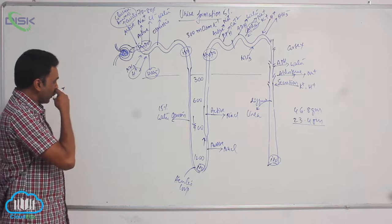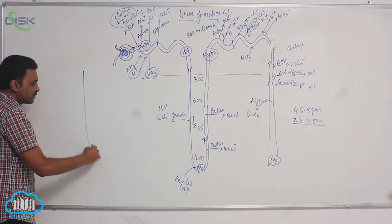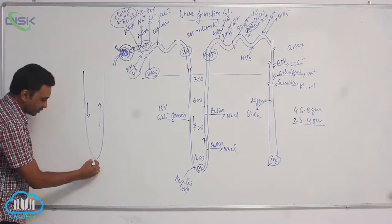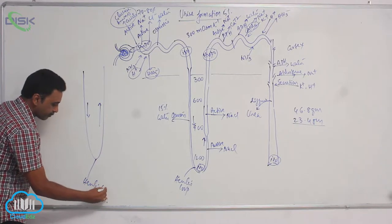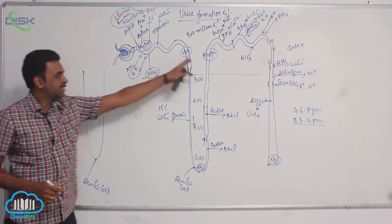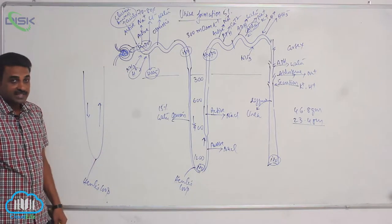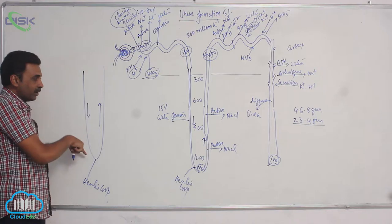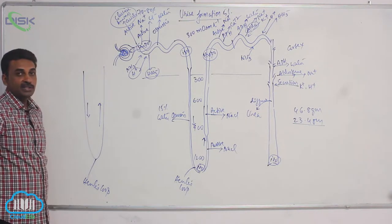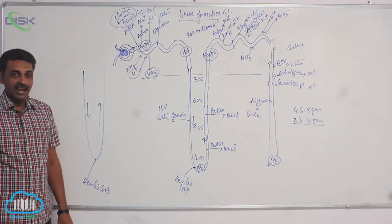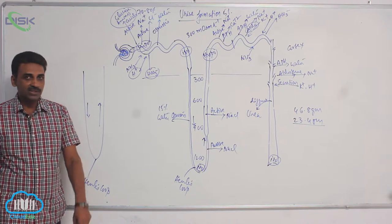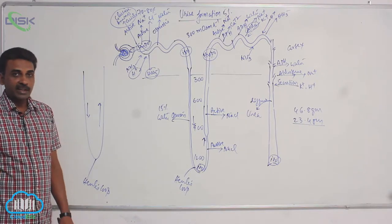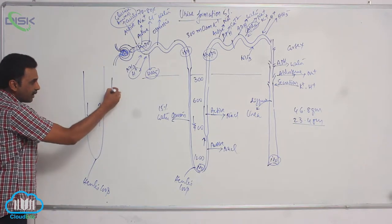Looking at this area — this is the Henle's loop. This is the descending limb of Henle's loop and that is the ascending limb of Henle's loop. If you observe the flow of primary urine in the descending and ascending limbs, it is opposite to each other — meaning there is a counter current. 'Counter' means opposite, so the flow of fluid is just opposite in them.